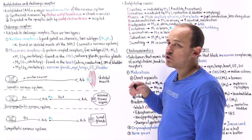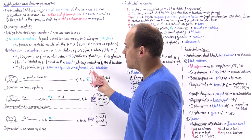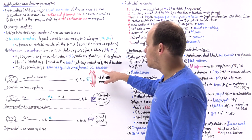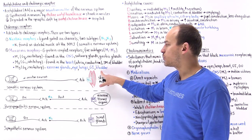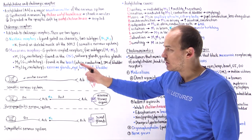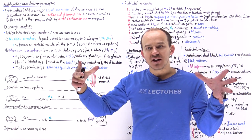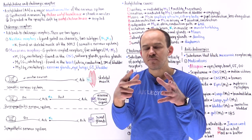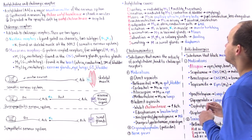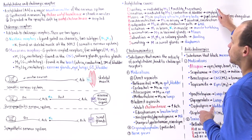U stands for urination. We have M3 receptors in the detrusor smooth muscle of the bladder wall. If we stimulate them, that causes contraction of that wall and emptying of urine from the bladder — causing urination.